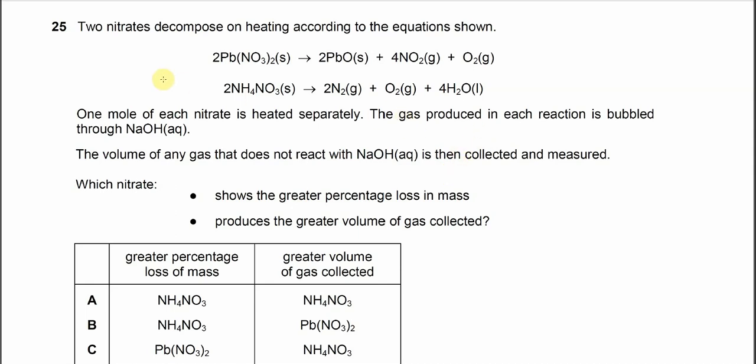Question 25. Two nitrates decompose on heating according to the equation shown. The lead(II) nitrate decomposes to form lead oxide, NO2, and O2. Ammonium nitrate decomposes to form nitrogen, oxygen, and H2O.